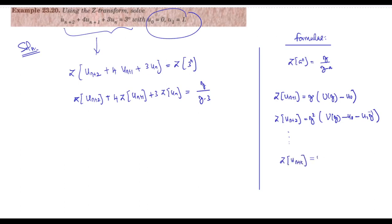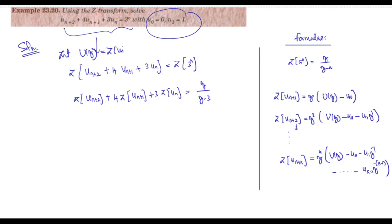In general, Z{U(n+k)} = Z^k·U(Z) − U(0) − U(1)·Z^(−1) − ... − U(k−1)·Z^(−(k−1)). That's the formula required for this problem. We also define U(Z) = Z{U(n)}, so that's why we define it in advance.